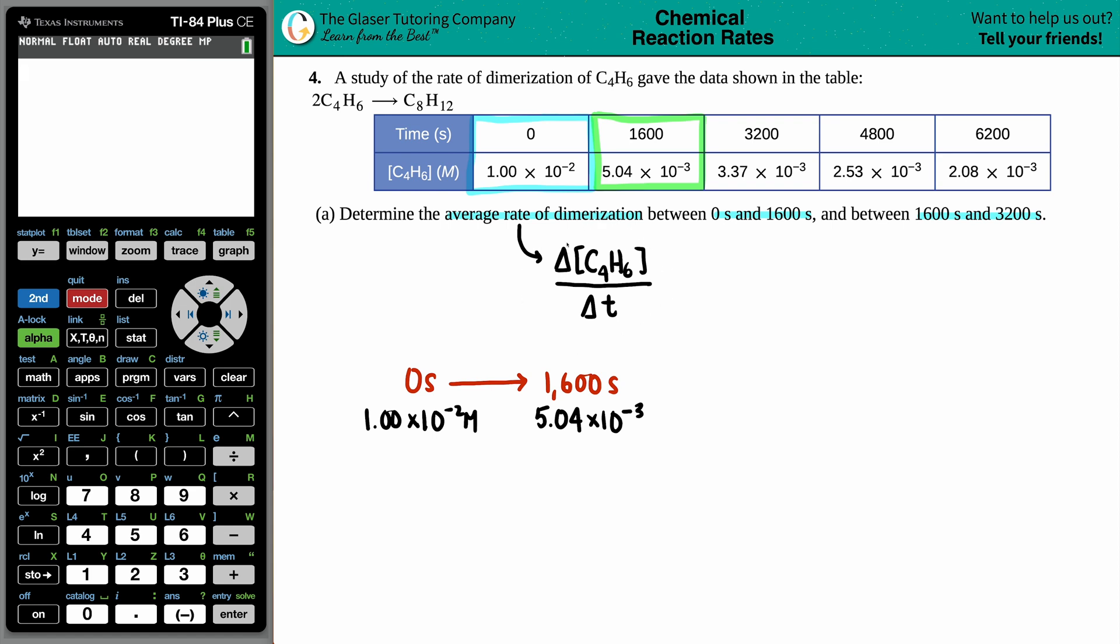Now, remember what a change means. Generally speaking, a change is a final minus initial. So I'm going to expand this division sign. We're just going to say that it's the concentration of the C4H6 minus the C4H6, concentration of C4H6. And it's always final minus initial. And it's divided by the certain time minus a time. And the times have to go together as well. Final minus initial.